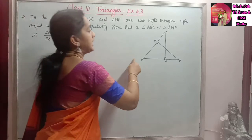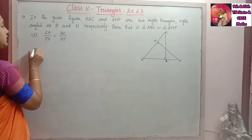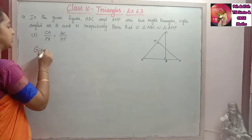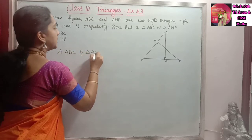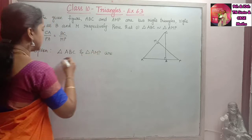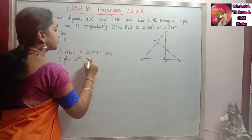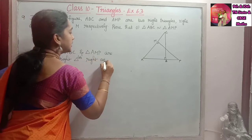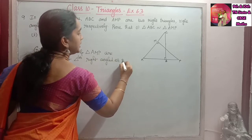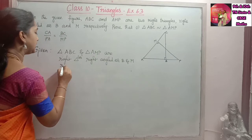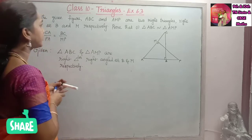First we will prove that triangle ABC and triangle AMP are similar. So first we will write whatever is given. Given: triangle ABC and triangle AMP are right triangles, right angled at B and M respectively.